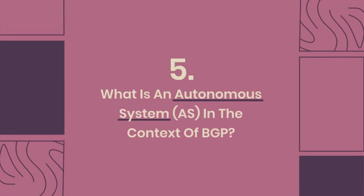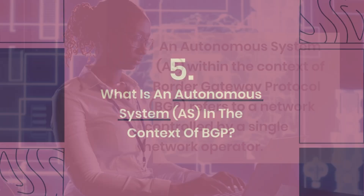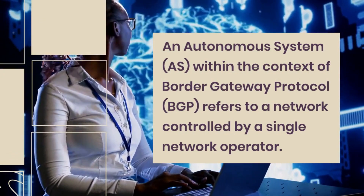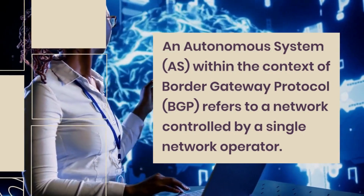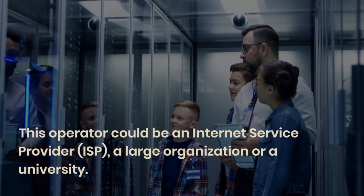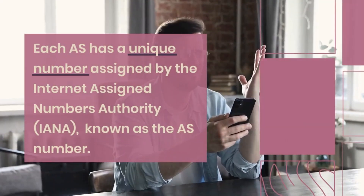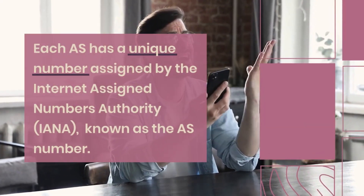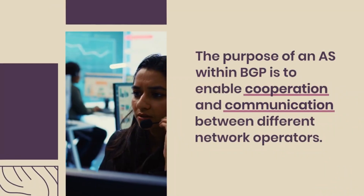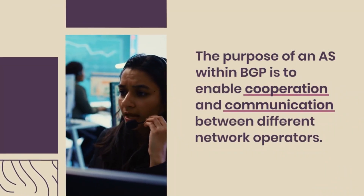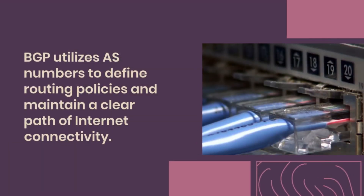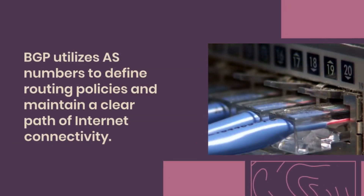What is an autonomous system (AS) in the context of BGP? An autonomous system, AS, refers to a network controlled by a single network operator, which could be an internet service provider, ISP, a large organization, or a university. Each AS has a unique number assigned by the Internet Assigned Numbers Authority, IANA, known as the AS number. The purpose of an AS within BGP is to enable cooperation and communication between different network operators, and BGP utilizes AS numbers to define routing policies and maintain internet connectivity.